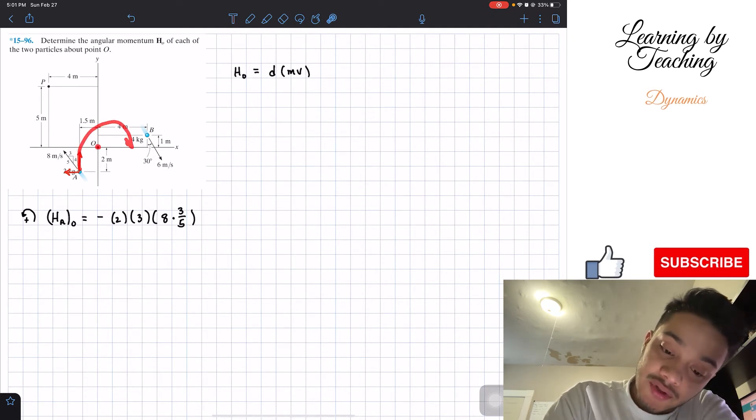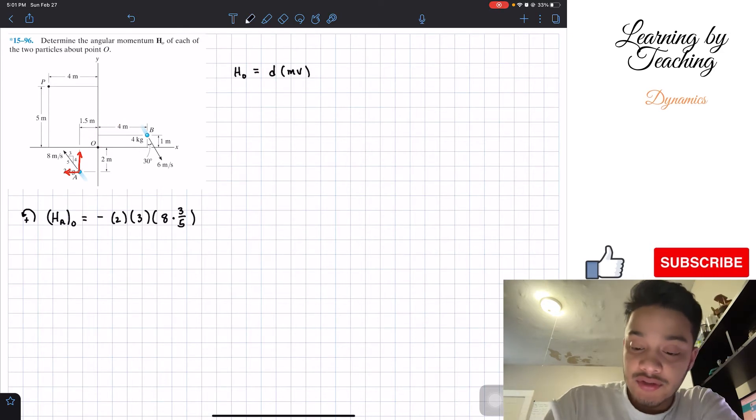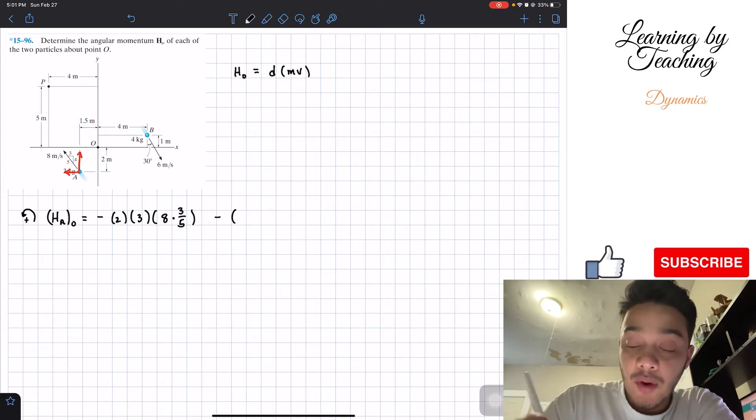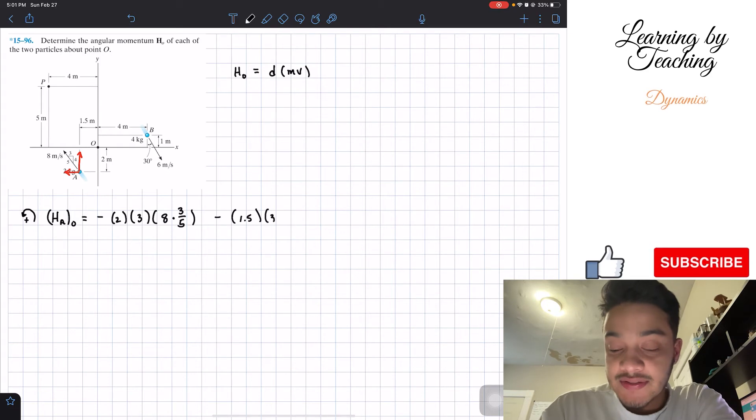Then we're going to do the same thing but with my y component of my velocity. Same thing, it's going to go in the clockwise direction, so it's going to be negative. Its distance is going to be this 1.5 meters. So we got 1.5 multiplied by the mass equal to three, and its velocity is going to be eight multiplied by four over five.